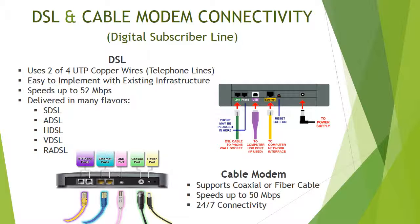Then there was ADSL — Asymmetric DSL — in which data downstream travels faster than upstream. And then High-bit DSL, or HDSL, which provides T1-compatible speeds of 1.544 megabits per second over the same telephone line copper wires. Then we have the cable modem, which is basically the same modem used to transfer TV information. This supports both coaxial and fiber cable, with speeds up to 50 megabits per second, and has 24 by 7 connectivity.